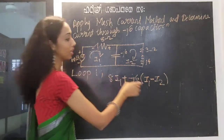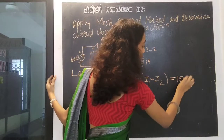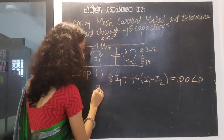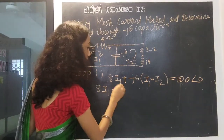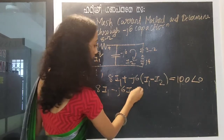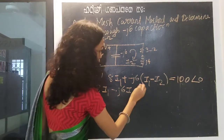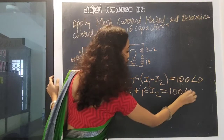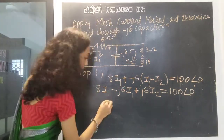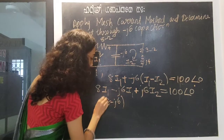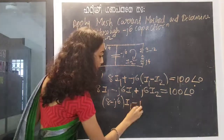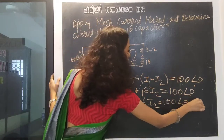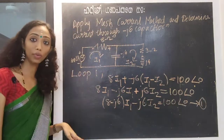Supply voltage equals 100 angle 0. This is 8I1 minus J6·I1 minus of minus plus J6·I2 is equal to 100 angle 0. We collect terms: 8 minus J6 into I1, then minus J6·I2 is equal to 100 angle 0, which is equation number 1.